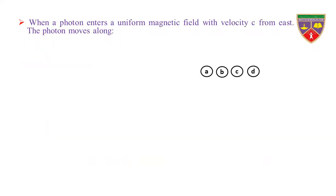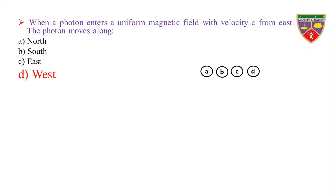When a photon enters a uniform magnetic field with velocity C from east, the photon moves along: Option A, north. Option B, south. Option C, east. Option D, west. The key is west. Therefore, the correct option is D.